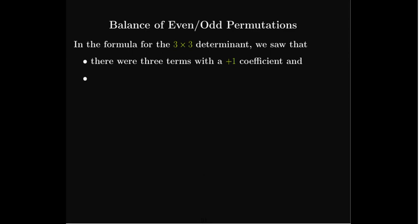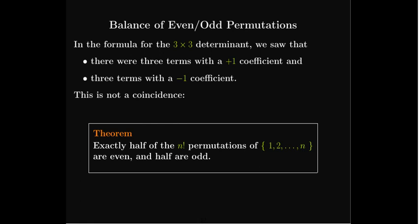Finally, returning to the 3×3 determinant formula, we saw three terms with a plus coefficient and three with a minus coefficient — and that's not a coincidence. If you have a list of n counting numbers, there are n factorial permutations, and exactly half of them are even and half are odd.